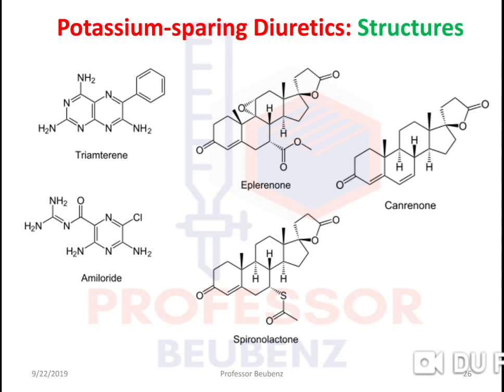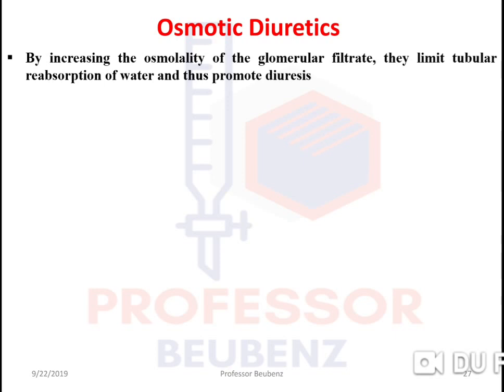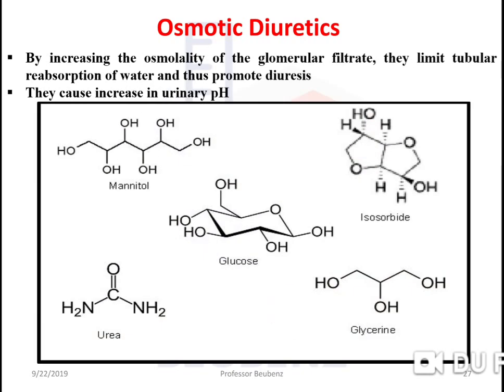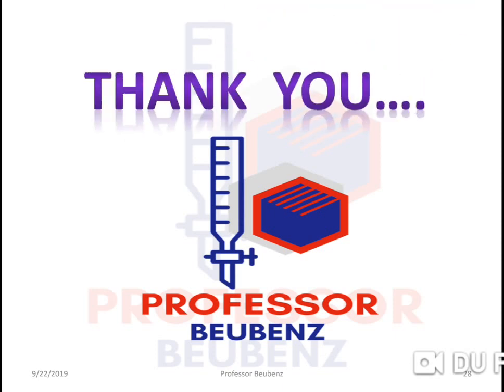Potassium-sparing diuretics — structures include triamterene and spironolactone. These drugs do not have structural similarities, so no SAR can be established. Osmotic diuretics work by increasing the osmolality of the glomerular filtrate, limiting tubular reabsorption of water and promoting diuresis; they also cause increasing urinary pH. Examples include mannitol, glucose, isosorbide, glycerin, and urea. This concludes the chemistry of anti-anginal agents — thank you for watching, stay connected.